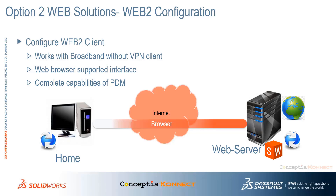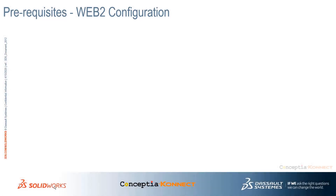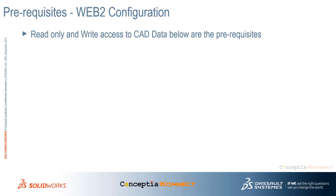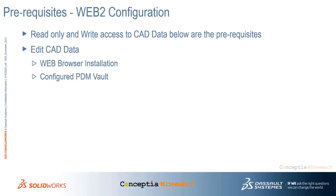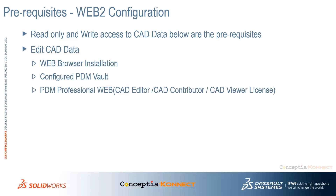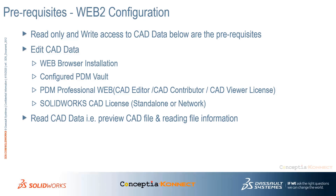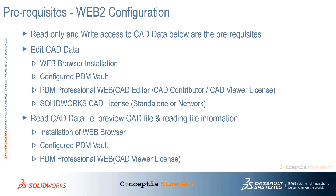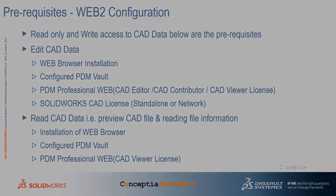Now let's take a look at the pre-requisites required to set up the PDM web application. To edit CAD data, you first require a web browser installation, then a configured PDM vault, PDM Professional Web, and a CAD editor, contributor, or CAD viewer license, plus a SolidWorks CAD license to use the downloaded CAD model for modification. To only read CAD data — that is, preview CAD files and read file information — you just need a browser installation, a configured PDM vault, and a PDM CAD viewer Professional license.